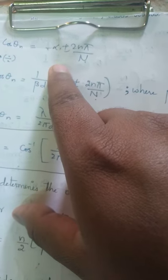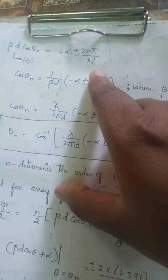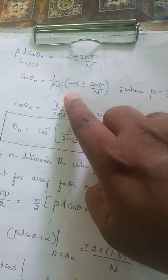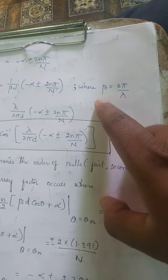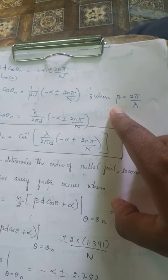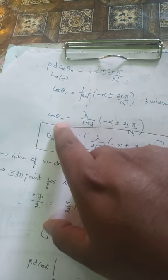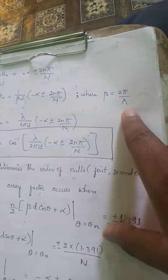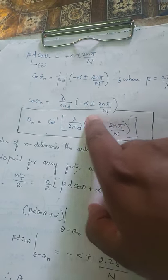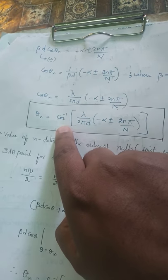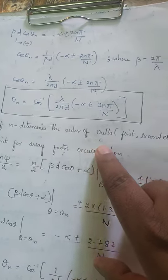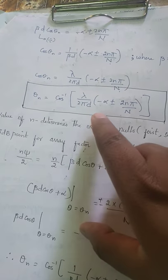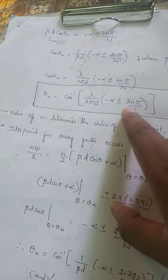Replacing chi with beta·d·cos(theta) plus alpha, shifting alpha over, we get beta·d·cos(theta) = minus alpha ± 2·N·pi / capital N. So cos(theta) equals (1/beta·d) times (minus alpha ± 2·N·pi / N). Since beta equals 2·pi / lambda, we write cos(theta_n) = (lambda / 2·pi·d) times (minus alpha ± 2·N·pi / N). The value of N determines the order of the null — first null or second null.